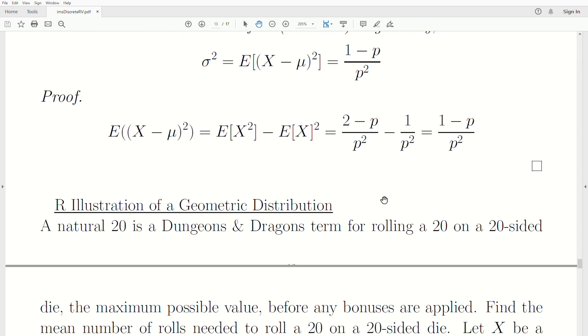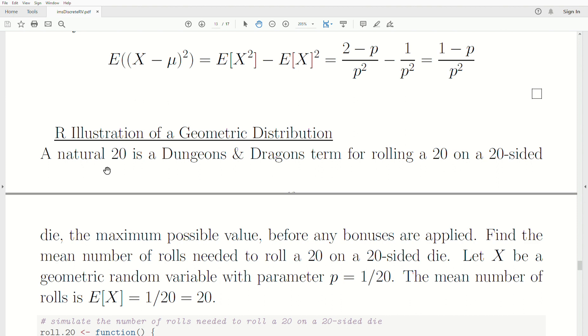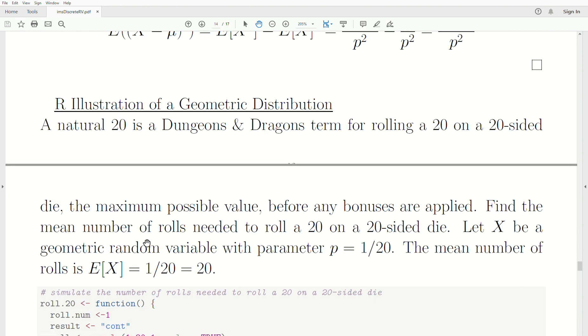Now let's do a quick illustration and then call this video quits. A natural 20 is a Dungeons & Dragons term for rolling a 20 on a 20-sided die, which is the maximum possible value before any bonuses are applied. Find the mean number of rolls needed to roll a 20 on a 20-sided die. Let X be a geometric random variable with parameter 1 over P. Then the mean number of rolls is the expected value of X, which is 1 over P, which is 120.